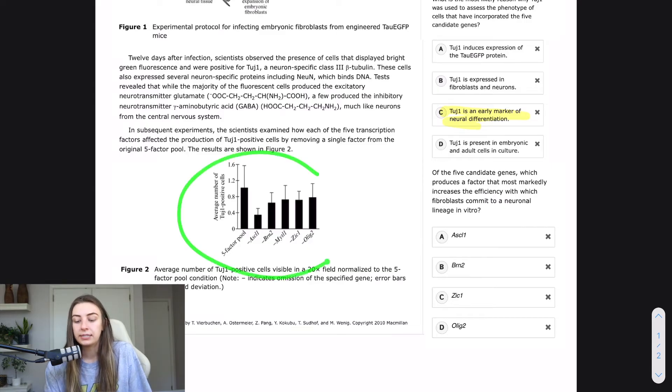This is the five candidate genes down here at the bottom. And it looks like if we read our figure caption, it says that the minus sign indicates omission of the specified gene. So like this one has all of them in there. This is when you subtract the ASCL one. This one's when you subtract the Olig two. So you can see that in each of these bars, there's four genes there and one is omitted.